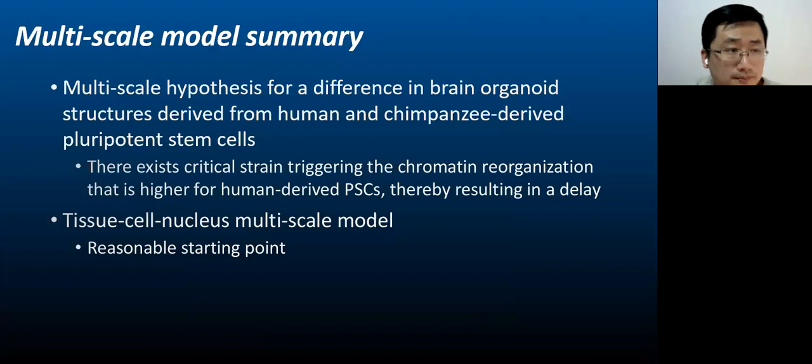To summarize, we postulate a multi-scale hypothesis for difference in brain organoid structure derived from human and chimpanzee derived stem cells. The hypothesis is there exists critical strain triggering the chromatin reorganization that is higher for human derived stem cells, thereby resulting in a delay. Our multi-scale model from tissue scale to cell scale to nuclear scale is a reasonable starting point to test this hypothesis.